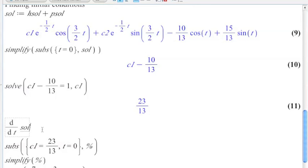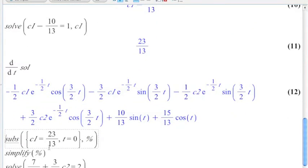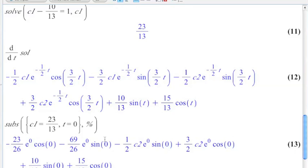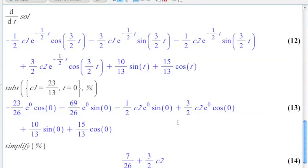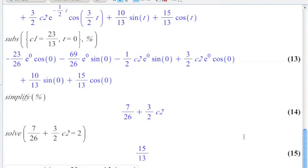I need to take the derivative of my solution. There it is. I'm going to plug in what I know C1 is. With all that stuff. And time 0. And simplify it. So I get that. Let's simplify it. And I want all that to be equal to 2. So that's my C2.